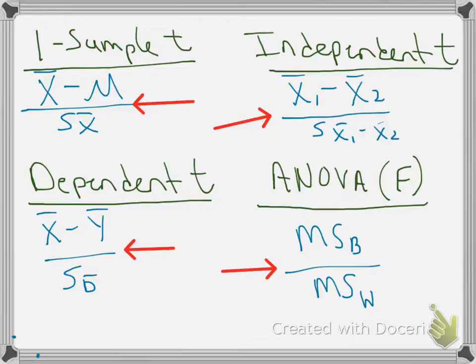Once you get the idea that all of these things are testing how big is the observed difference between the means relative to the size of the expected difference between the means just due to random sampling, you can see that these are all really closely related formulas and tests, and they're all doing basically the same thing.